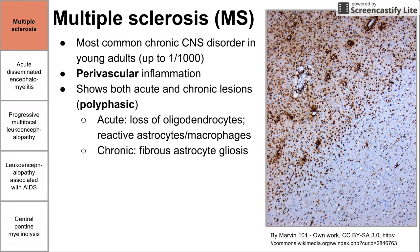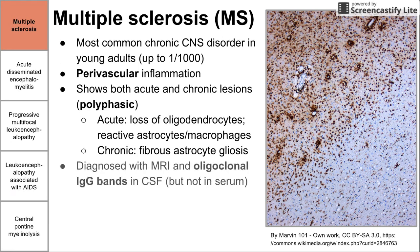The chronic lesions in MS are fibrous astrocyte gliosis — this is essentially the scar tissue of the central nervous system, the body's deposition of glial cells in response to inflammation. MS is diagnosed with MRI, where you see white patches and sclerotic spots, and more definitively with oligoclonal IgG bands in the CSF, which tells us there is an immune component to MS.